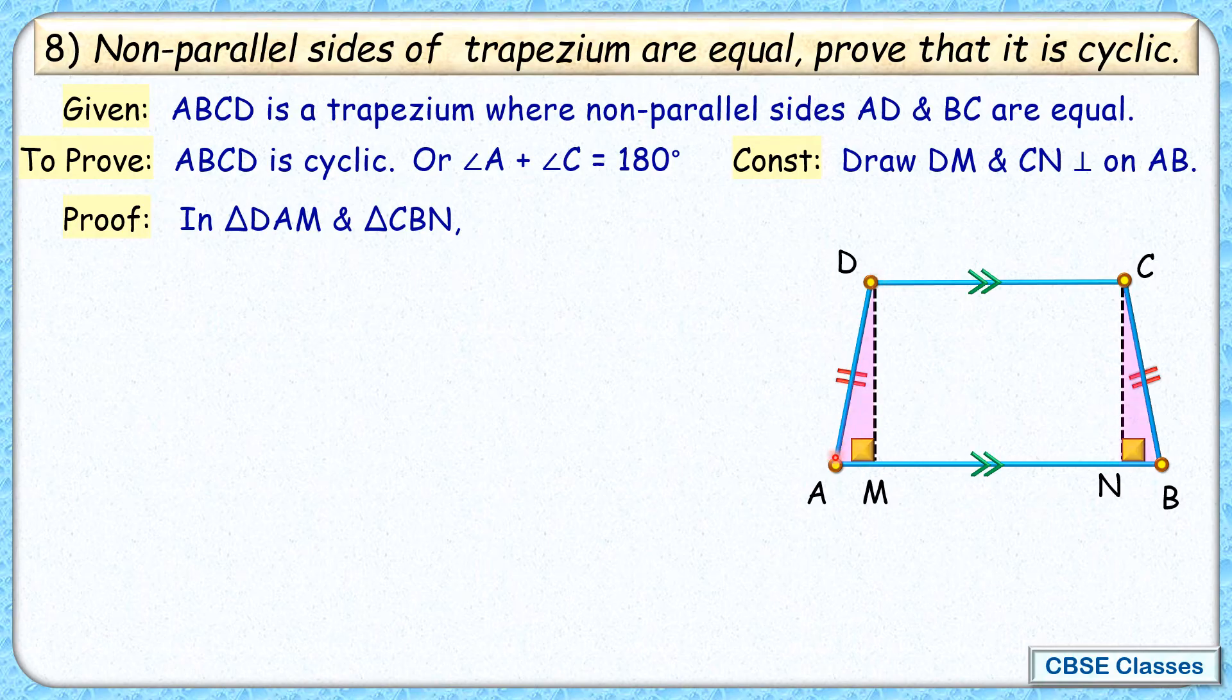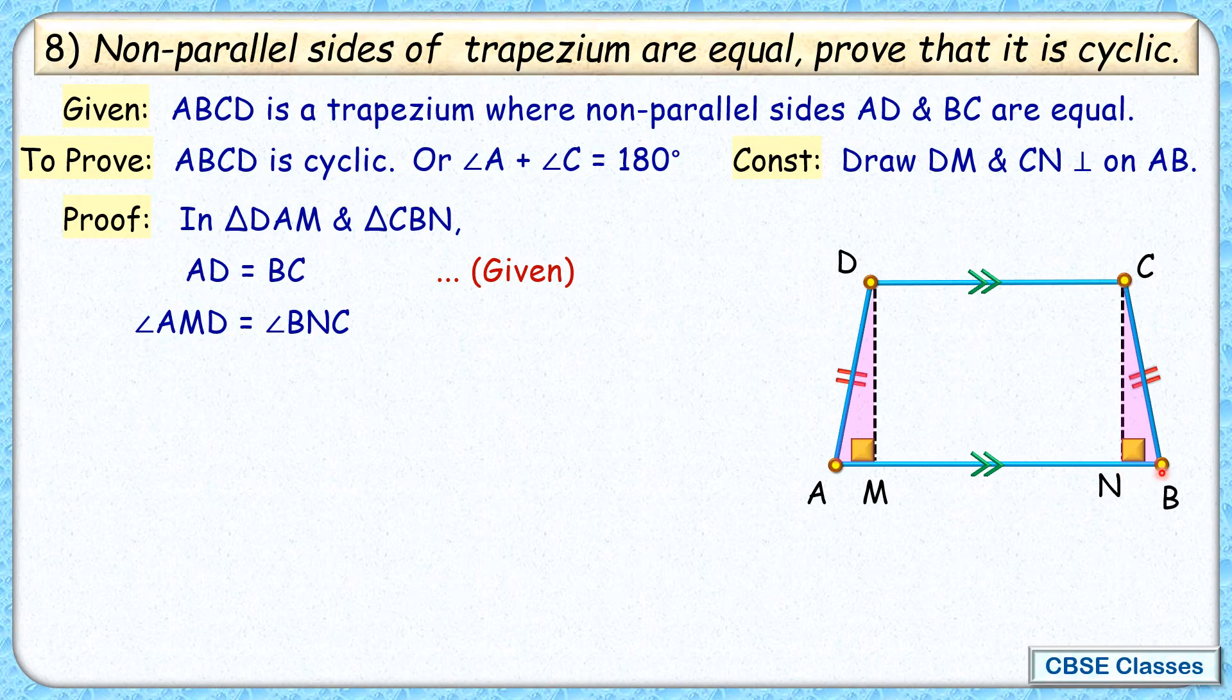That is, this triangle DAM and this triangle CBN. Now in these two triangles, AD and BC are equal. Why are they equal? Because it's given in the question. And angle DMA and angle CNB are also equal because each of them is 90 degrees by construction.